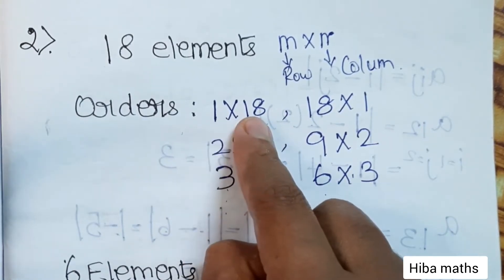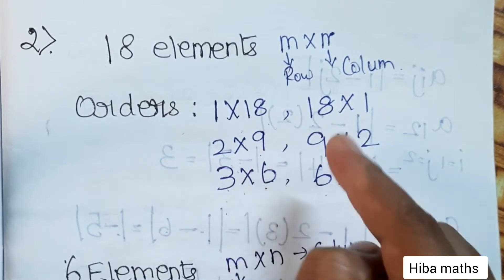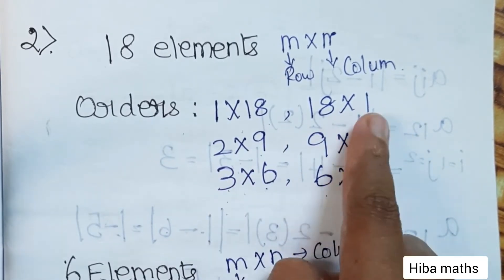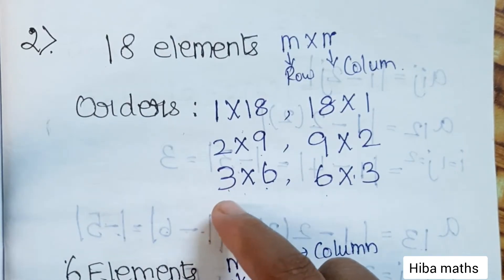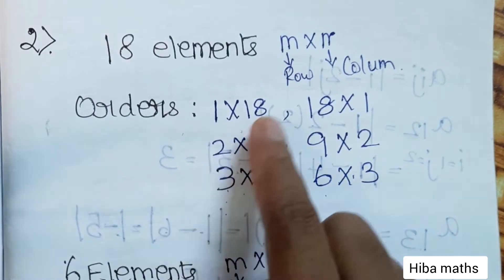1 into 18, 18 in the 2 table is 2 into 9, 18 in the 3 table is 3 into 6. Then 4 table doesn't work, 5 table doesn't work, 6 table again gives 6 into 3, then 9 into 2, and 18 into 1.